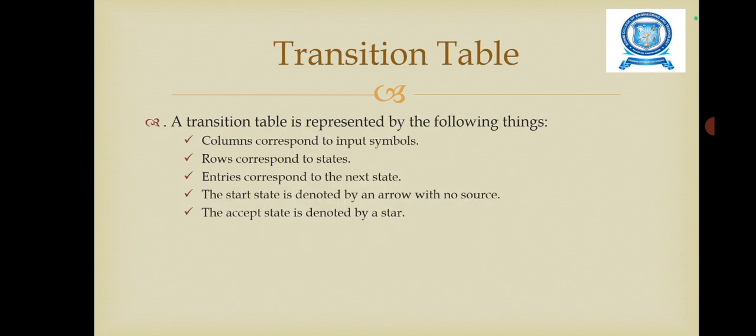Next we are going to see the transition table. It is represented by a tabular representation of the transition function. It takes two arguments: a state and a next state. Columns correspond to input symbols, rows correspond to states, and entries correspond to the next state. The start state is denoted by an arrow with no source. The accept state is denoted by a star.